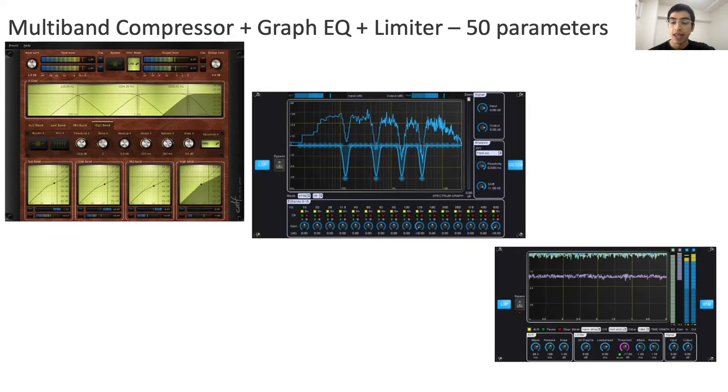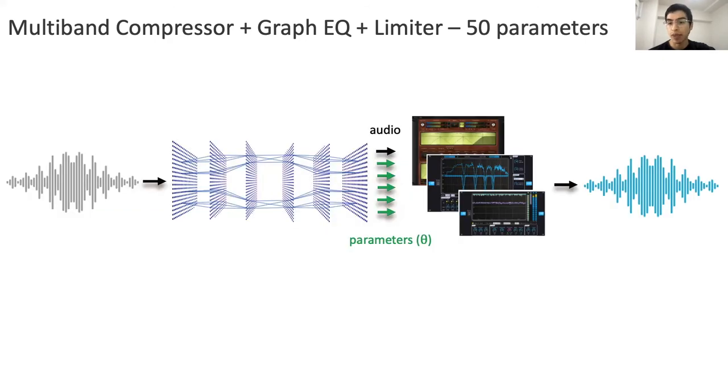The last task is music mastering, or music post-production, which is a process of enhancing a recording by manipulating certain characteristics of the mixture, such as the dynamics or frequency content. This manipulation is usually done by an experienced mastering engineer. For this task, we're going to incorporate three audio effects in series: a multiband compressor, a graphic equalizer, and a limiter. These give us in total 50 parameters.